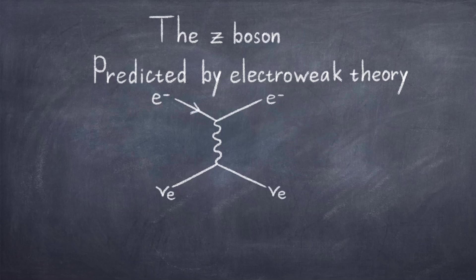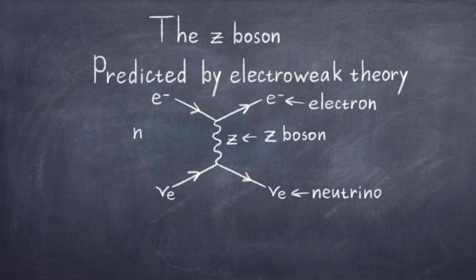This boson was predicted by the fundamental electroweak theory. Now unlike the photon, the Z boson interacts with neutrinos. And neutrino interactions are a bit of a signature of the weak force, because it is the only force to interact with neutrinos. Because the Z boson interacts with both electrons and neutrinos, one can have scattering between the two. Thus, an electron can scatter off a neutrino via a Z boson. This was how this boson was detected in 1973.